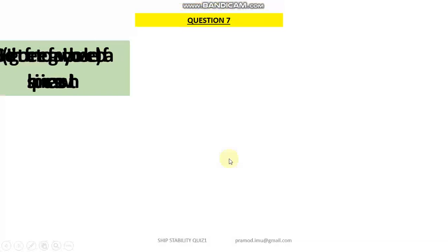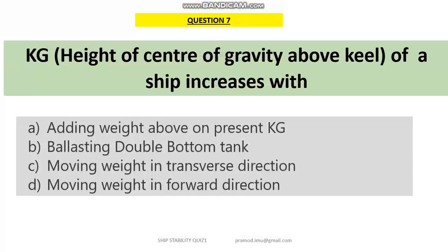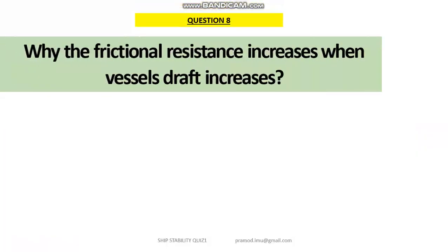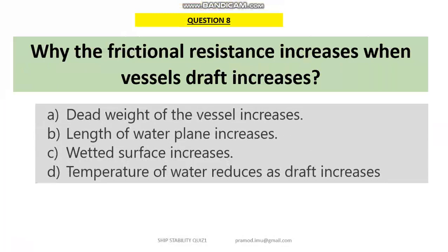Question number 7: the KG, the height of a ship's center of gravity, will increase — the answer is option A — when we add weight above the present position of the center of gravity. Question 8: why does frictional resistance increase with vessel's draft? We know that frictional resistance mainly depends upon the wetted surface area of a vessel, so as that value increases with draft, the frictional resistance also increases.